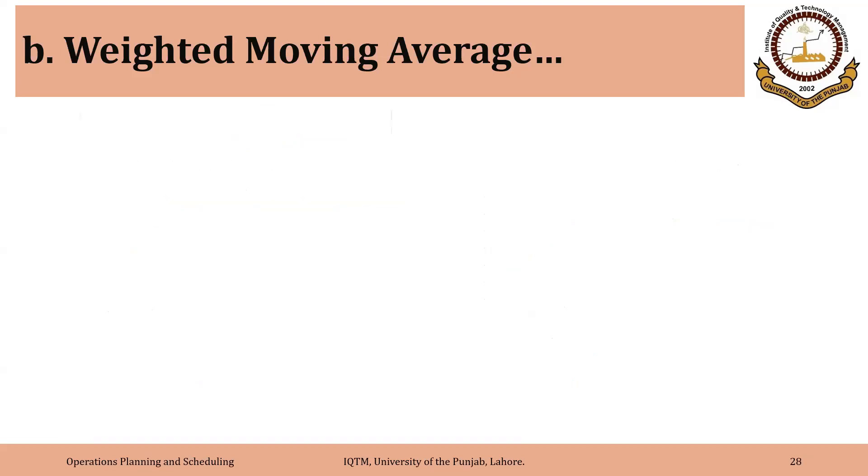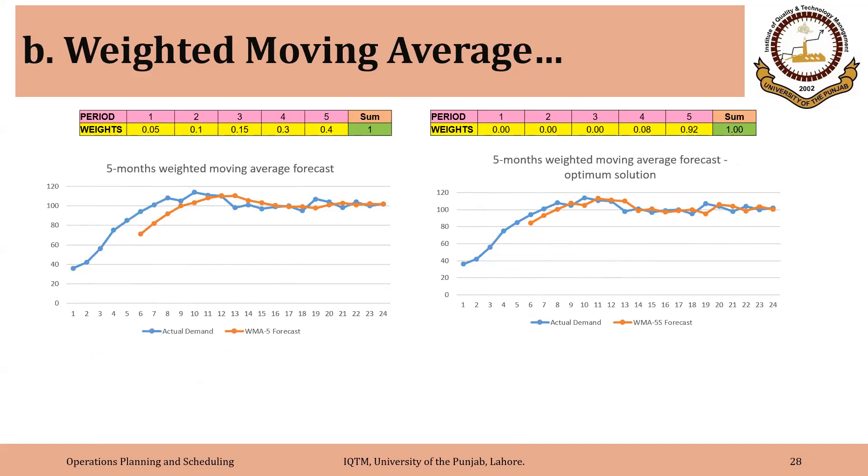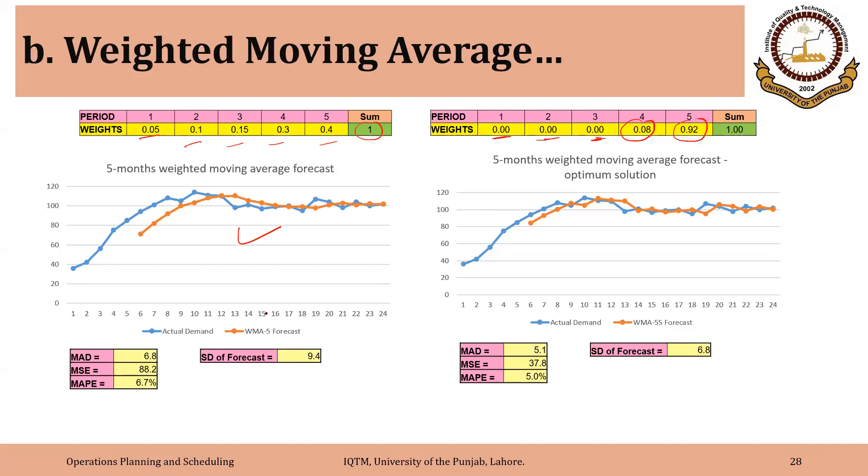Now, I solved for five months weighted moving average as well. And arbitrarily I assigned the weights of 0.05, 0.1, 0.15, 0.3 and 0.4 and sum was 1. And I got this result. And then I asked Excel to solve for me. So I found W1, W2, W3 to be 0 and W4 was found to be 0.08 and W5 was found to be 0.92. You can see graphically as well as with the help of numerical values that the error is greater for the arbitrary weights and it is less for the optimum weights.